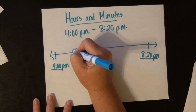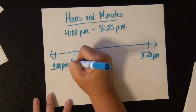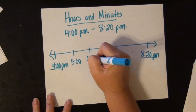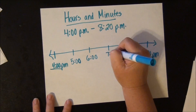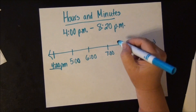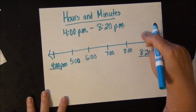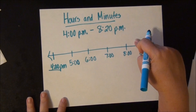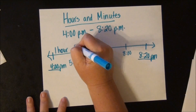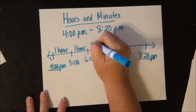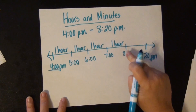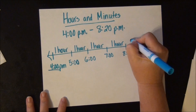So let's go ahead and count off the hours: 5 o'clock, 6 o'clock, 7 o'clock, and 8 o'clock. We know that these spaces are 1 hour each. The last space is not a full hour, so we won't write 1 hour there. We have 1 hour, 1 hour, 1 hour, 1 hour, and then from 8 o'clock to 8:20 p.m. is 20 minutes.